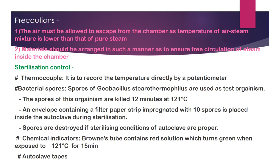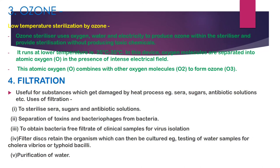Chemical indicators: Brownie's tube contains a red solution which turns green when exposed to 121°C for 15 minutes. Autoclave tape is also used. Ozone sterilization uses a low-temperature ozone sterilizer that generates ozone from oxygen, water, and electricity, providing sterilization without producing toxic chemicals. It runs at 25°C to 35°C.